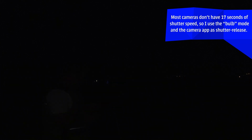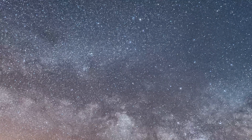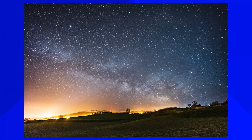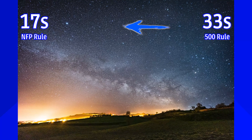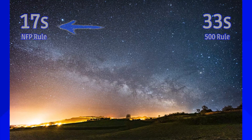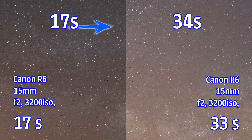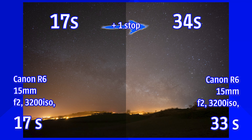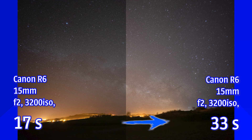Shooting at 17 seconds with the NPF rule produces no star trails, as promised. But as night photographers, we want to capture as much light as possible. From 33 seconds with the 500 rule down to 17 seconds with the NPF rule — how much light did we lose? Since one stop of light in shutter speed is double the previous number, going from 17 to 34 seconds is one full stop. So 17 vs 33 seconds is close to losing one full stop of light.